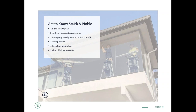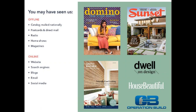Smith & Noble is located in Corona, California, and that's actually where I'm speaking to you from today. We have our corporate offices here along with our call center. We've been in business over 31 years and have covered approximately 8 million windows with various window treatments. One of the things that really sets Smith & Noble apart is our satisfaction guarantee along with our limited lifetime warranty. We believe in our products and we want our customers completely satisfied with what they've chosen for their homes. Here at Smith & Noble we want you to love where you live, and we stand behind our products.